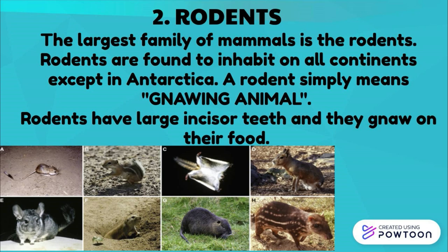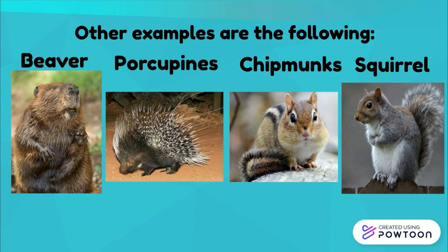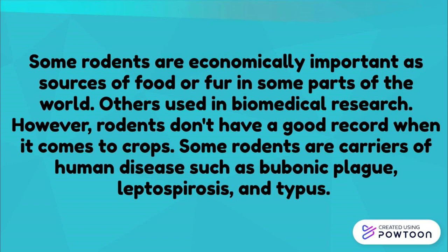Rodents form the largest family of mammals and are found on all continents except Antarctica. The word 'rodent' simply means gnawing animal — rodents have large incisor teeth and gnaw on their food. Some familiar rodents are mice, rats, hamsters, and guinea pigs, which are commonly kept as pets. Other examples include beaver, porcupines, chipmunks, and squirrel. Some rodents are economically important as sources of food or fur, and others are used in biomedical research. However, rodents have a poor record when it comes to crops, and some are carriers of human diseases such as bubonic plague, leptospirosis, and typhus.